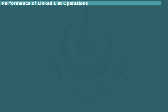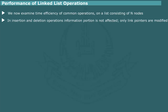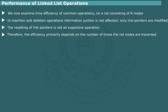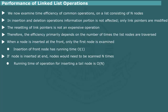Performance of linked list operations. We examine the time efficiency of common operations on a linked list of N nodes. In insertion and deletion, we simply readjust the linked pointers; the information portion of a node is not affected. The modification of linked pointers is not expensive because no movement of stored data takes place. The efficiency depends on the number of times list nodes are traversed. When a node is inserted at the front, running time does not depend on the size of the list, giving O(1). If a node is inserted at the end, nodes must be scanned N times with one comparison per step, giving O(N).